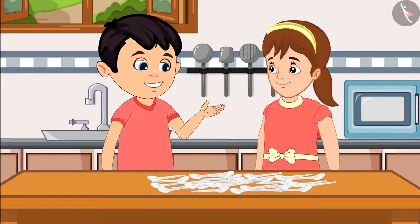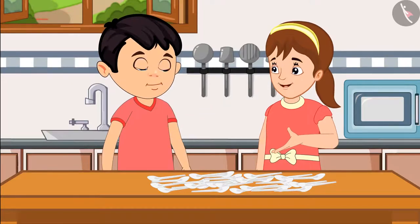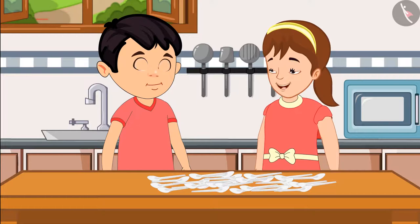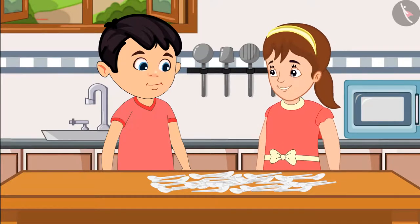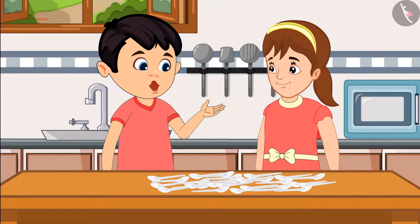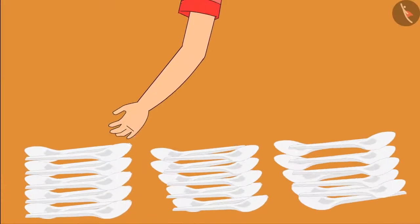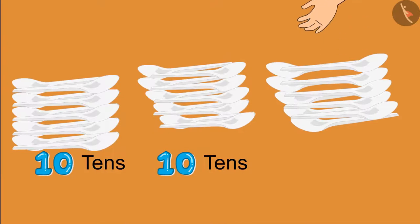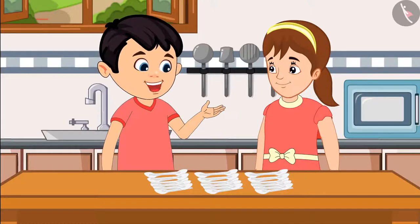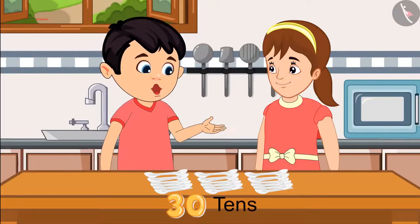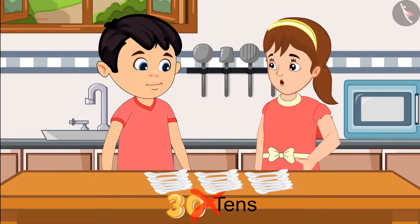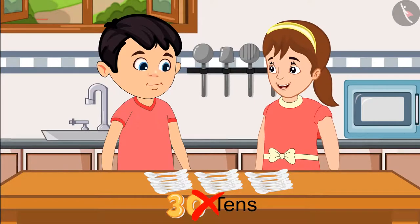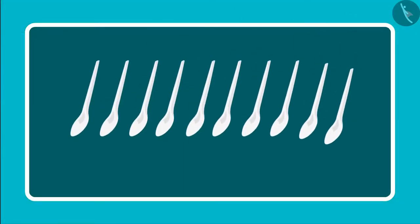Chotu says: "Okay, let us count these again. Let us divide them into groups of 10 — that will make it easier to count." They count: "10, 10, and another 10 — so this is a total of 30 tens." Mother corrects him: "Hey Chotu, you are counting it wrong! A group of 10 means one 10."